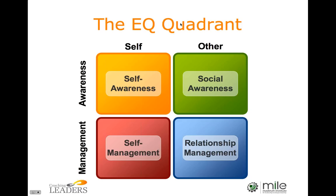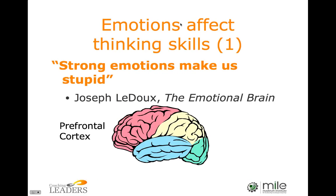Now let's look at three ways in which emotions affect your cognitive capacities — your ability to think and take decisions. First, strong emotions make us stupid. Strong emotional arousal knocks out the brain's prefrontal cortex, which is responsible for executive function: decision making, planning, impulse control especially in social situations, and deciding what's good or bad.